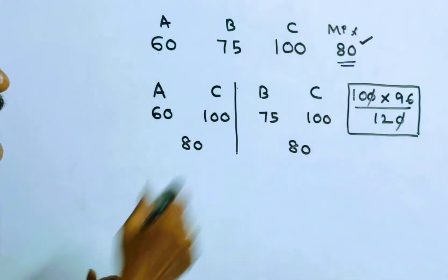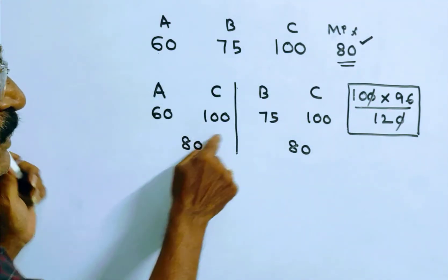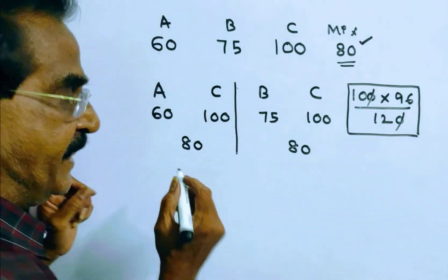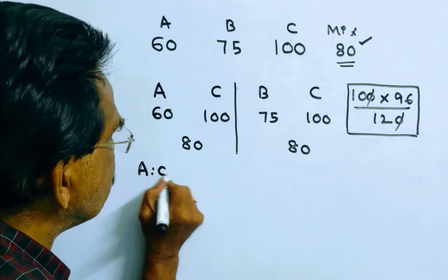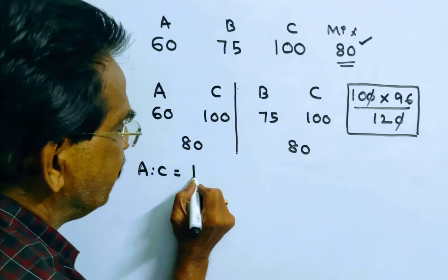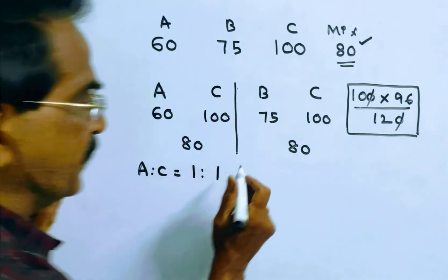This 80 lies between A and C. So now let us find the ratio of A and C by rule of Alligation. A is to C is equal to 20 is to 20, which is 1 is to 1. That's 100 minus 80 to 80 minus 60.